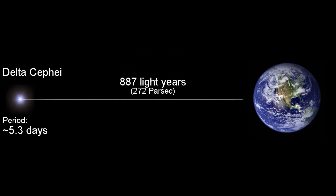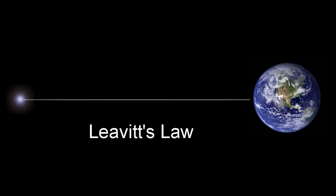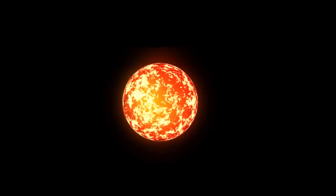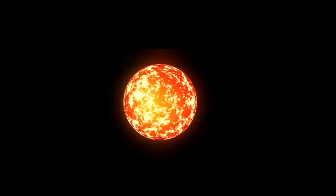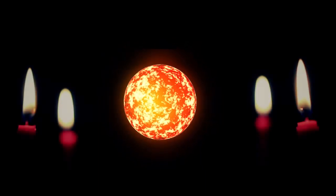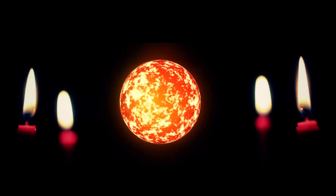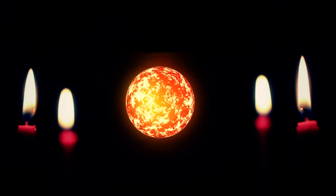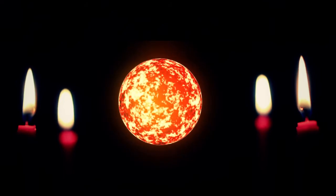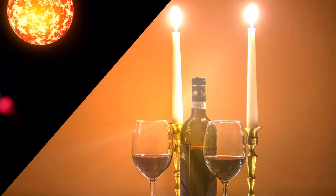This relationship is now called Levitt's law. To use the law accurately, you'd have to take into account things like dust that could diminish the star's brightness. The period luminosity relationship for Cepheid variables made them the first standard candle in astronomy. A standard candle is an astronomical object whose intrinsic brightness is very well known.